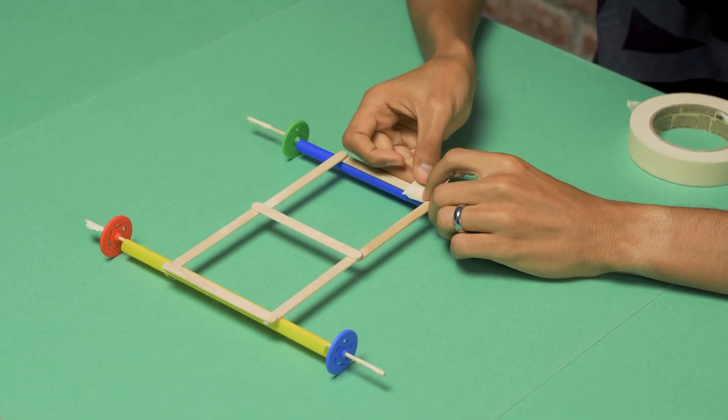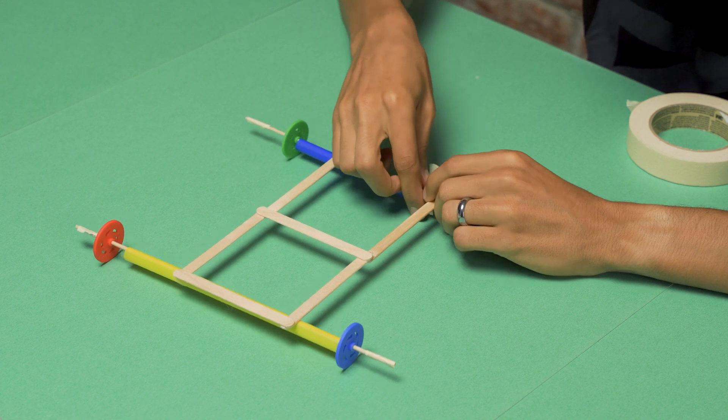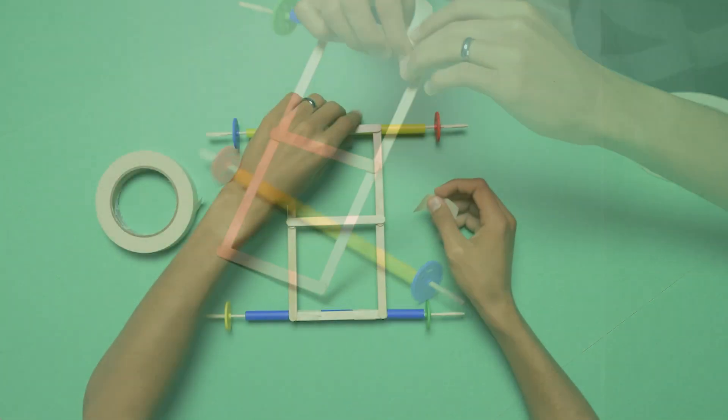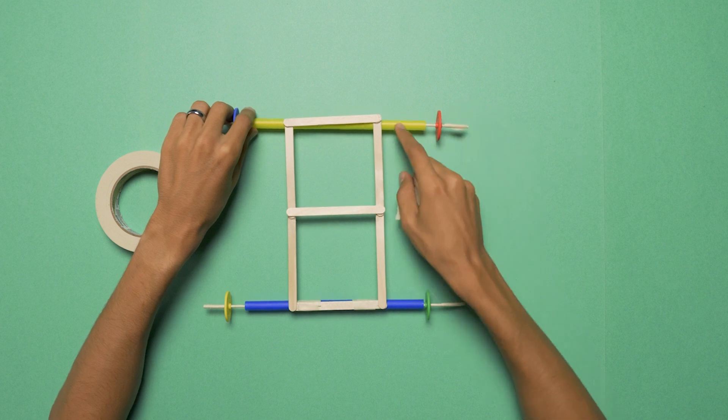Then we're going to tape the wheels to the rectangular frame that we built earlier. You'll just want to make sure that the frame is centered on the straw.